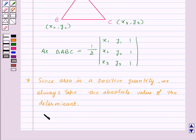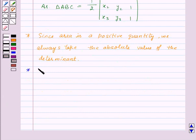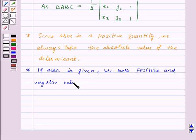The second point to remember is: if area is given and we need to find the coordinates of some point, then use both positive and negative values of the determinant for calculations.